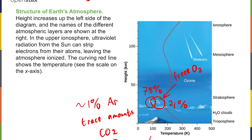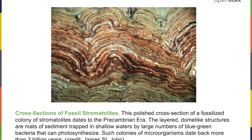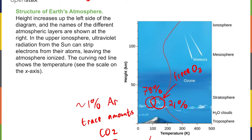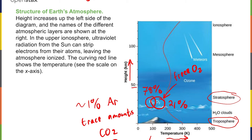Was the atmosphere always like this? Absolutely not — it has become this way due to the evolution of life. Looking at the temperature profile of the atmosphere as a function of height: at the surface the average temperature is around 300 Kelvin, about 20°C or 65°F. The temperature falls as you go up into the stratosphere, which makes sense — lower density air at higher elevations can't trap heat as well. We live in the troposphere, and a lot of weather occurs between the troposphere and the stratosphere.